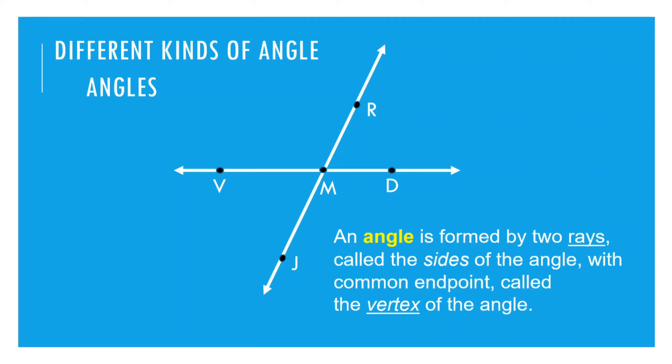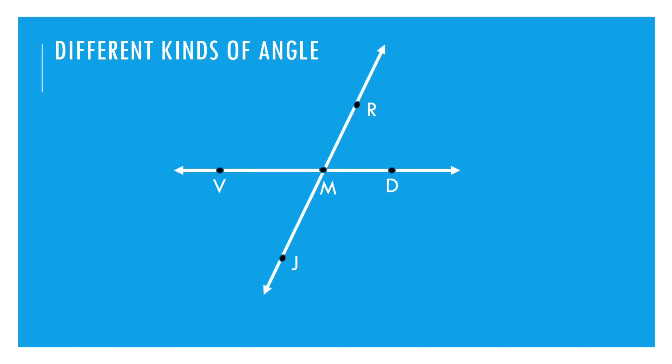Kung titignan natin ang intersection ng dalawang line, nakabuo siya ng mga angles with two rays and with the same end point which is the vertex. Alamin natin kung ano-ano ang mga angle na nabuo o kung ilang angle ang nabuo. Yan ang unang angle, yung kulay yellow. Then, that's our second angle. The third angle. And, the fourth angle. So, we have one, two, three, four. So, apat na angles ang nabuo when two lines intersect.